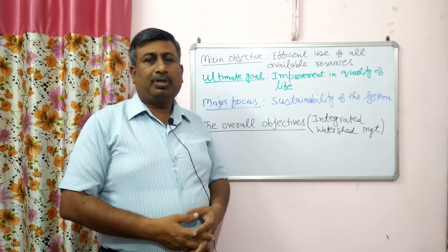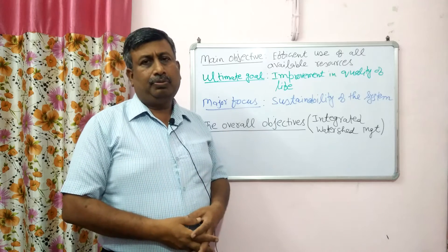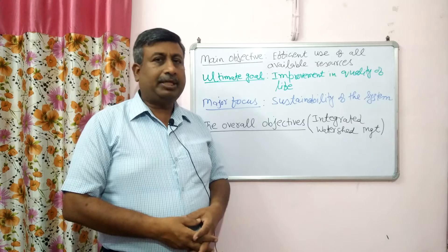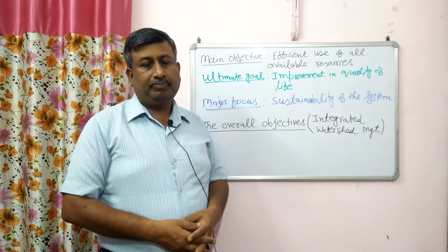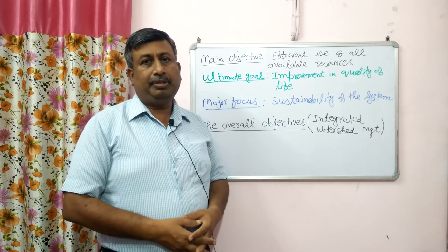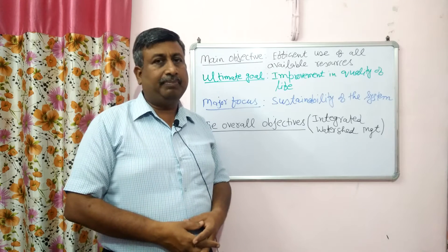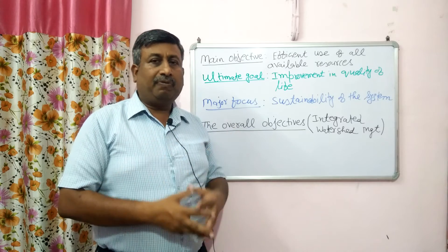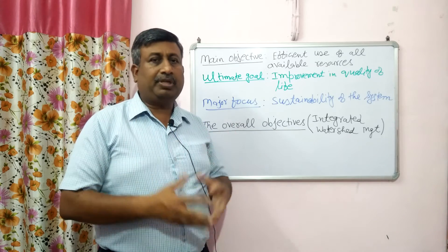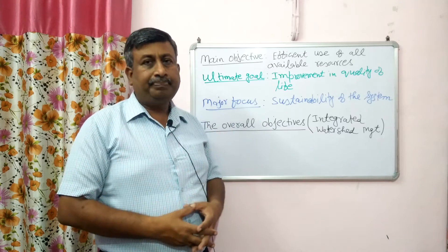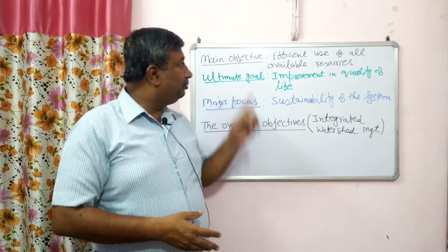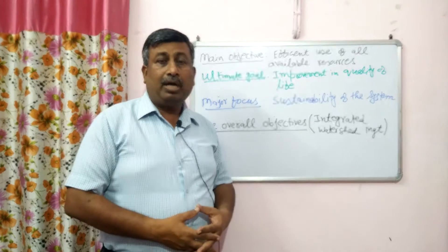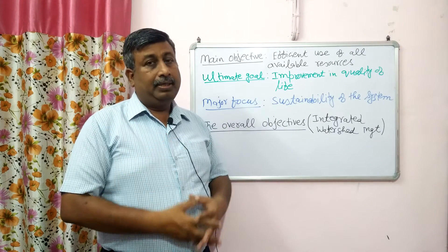The watershed size may be very large to just a few square meters. Depending upon the size, the objectives may be different. But if we talk about the main objective of watershed management — it means we are talking about an area — the main objective is the efficient use of all available resources of the watershed.